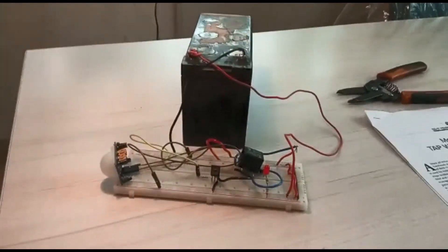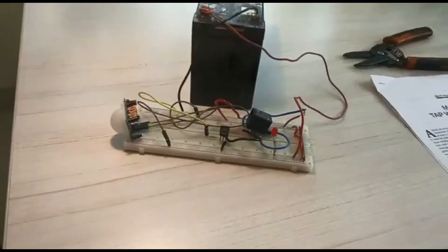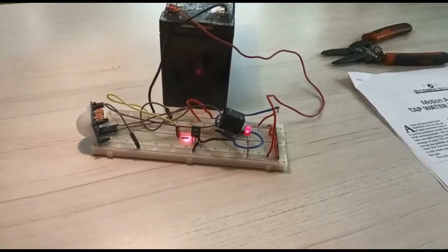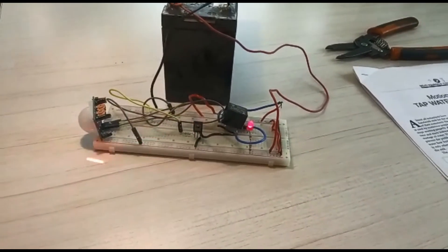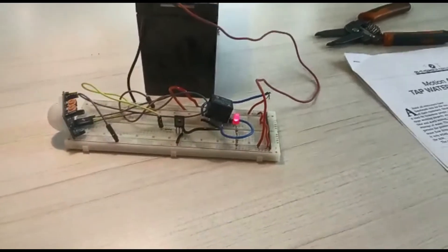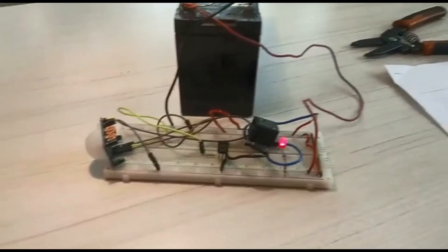Let me explain key parts of the project that you will learn more about while working on it. This project can help reduce water wastage. The circuit only lets water flow from the tap when it detects a motion or in other words a person.